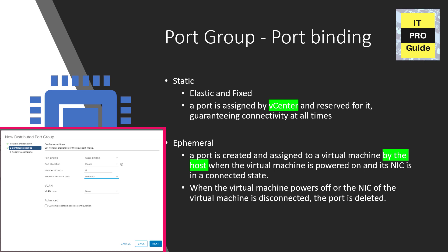In the slide you see only two: static binding and ephemeral binding. There was also dynamic binding, but it is no longer available in the latest version, so it's skipped here. In static binding, when you connect a virtual machine to a port group configured with static binding, a port is immediately assigned and reserved for it, guaranteeing connectivity at all times. The port is disconnected only when the virtual machine is removed from that port group. Static binding is the default setting and is mostly recommended for general use.